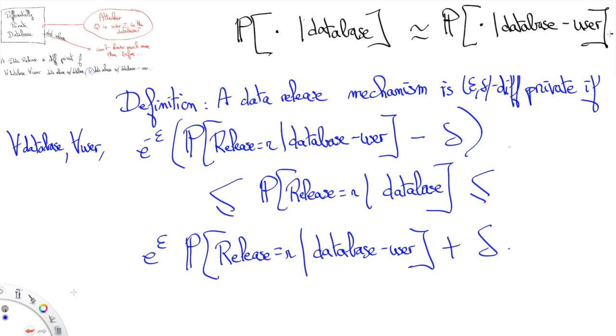So this seemingly complicated double inequality is actually saying that the probability distribution of the released data given that the user is removed from the database is nearly the same as the probability distribution of the released data given that the user is in the database. And when you take epsilon to be 0 and delta to be 0, you see that this inequality boils down to saying that the released data is independent from the user being in the database or not.